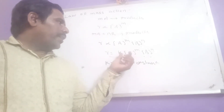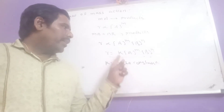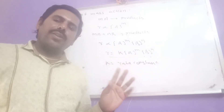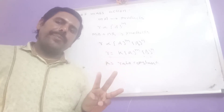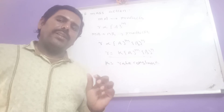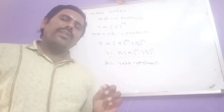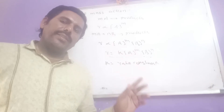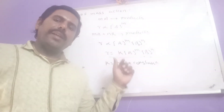What are the characteristics of k? Rate constant k depends on only three factors: first, the nature of the reactants; second, temperature; and third, catalyst. Only on these three factors does the rate constant k depend.